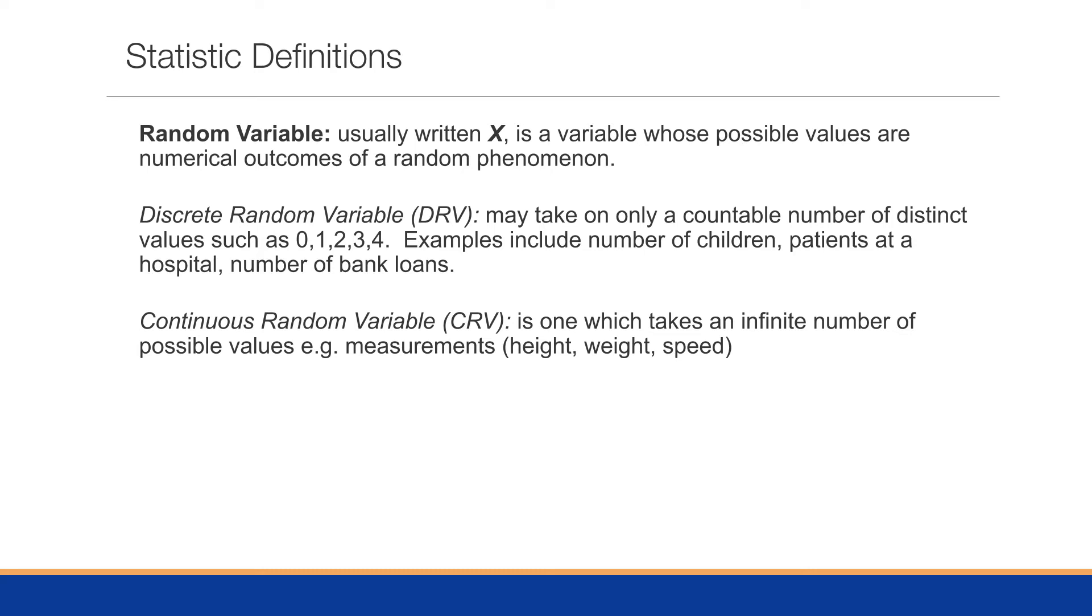A discrete random variable may take on only a countable number of distinct values, such as zero, one, two, three, or four. Examples might be number of children, patients at a hospital, or number of bank loans in a particular hour.